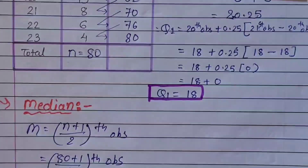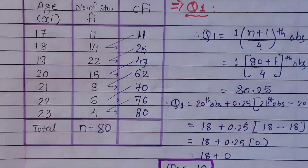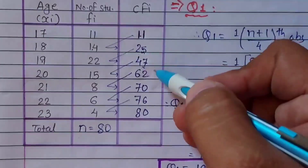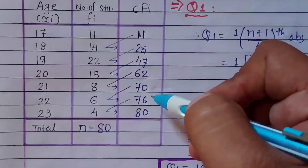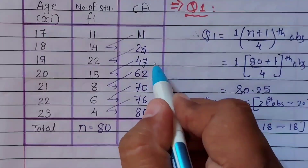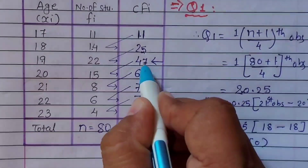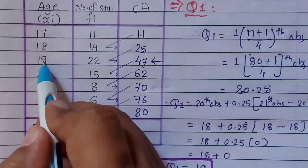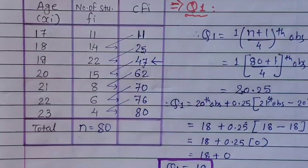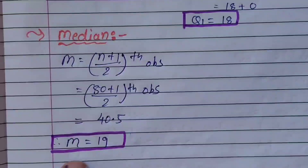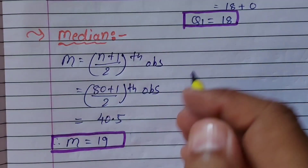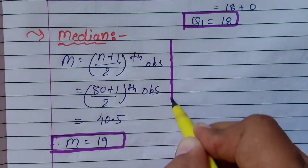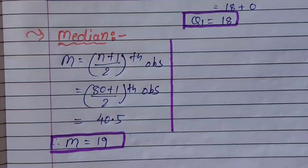We can see in our CF that 40 does not appear exactly anywhere. The first CF greater than 40.5 is 47, and the xi opposite to it is 19. Therefore our median is 19. Even applying the full formula gives the same answer: 40th and 41st observations both fall under CF 47, both giving xi = 19, so median = 19 + 0.5 × (19 − 19) = 19.